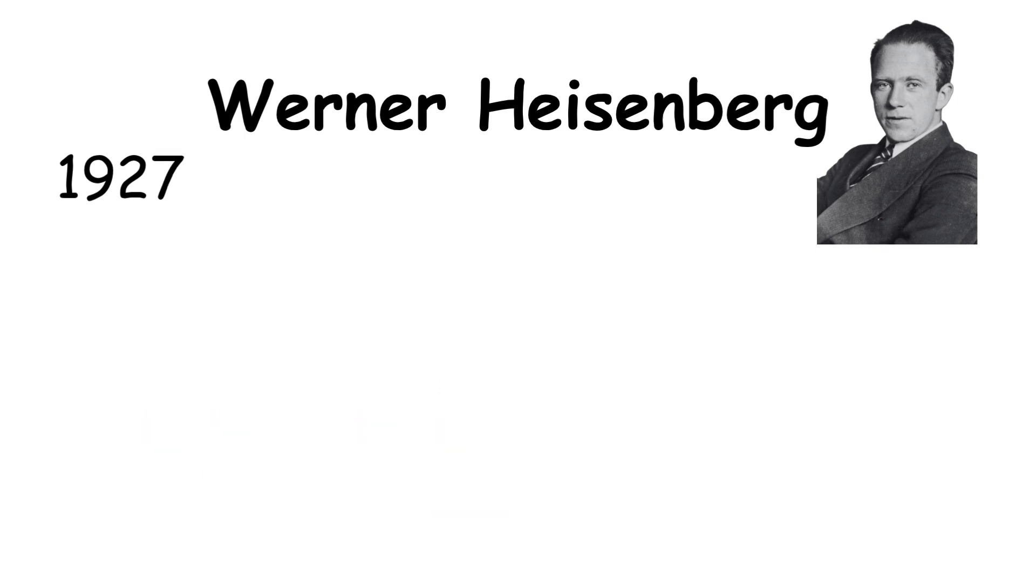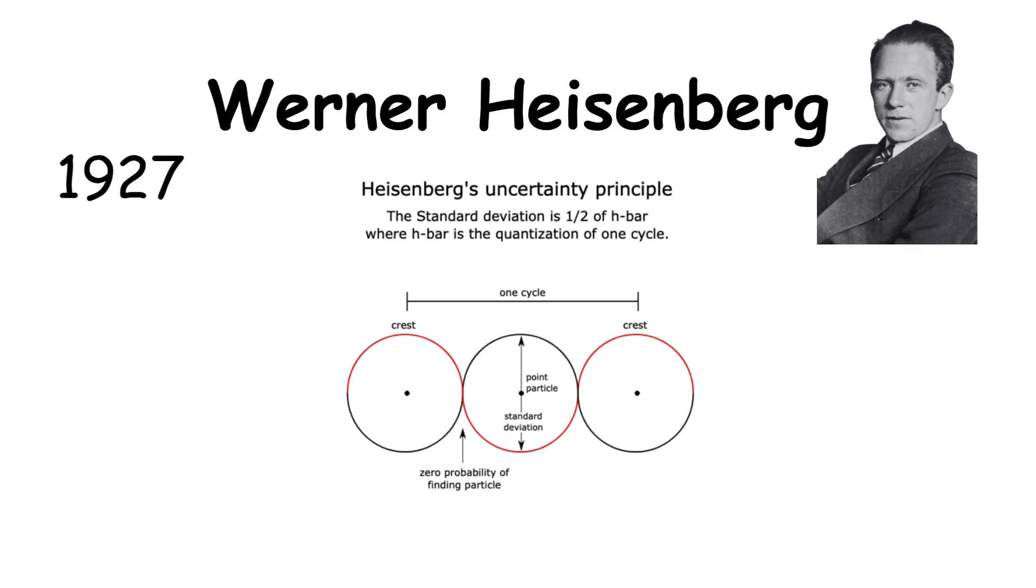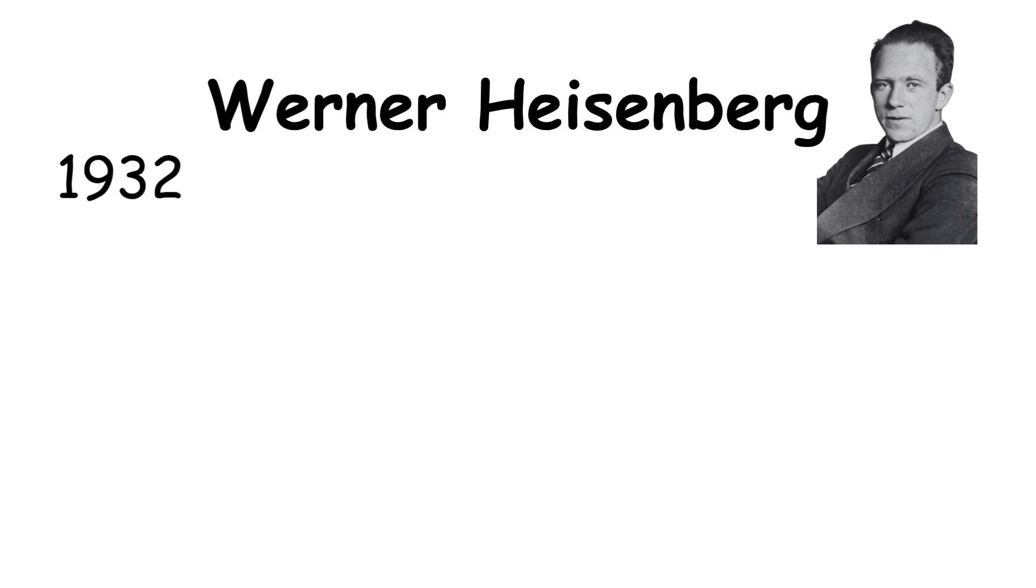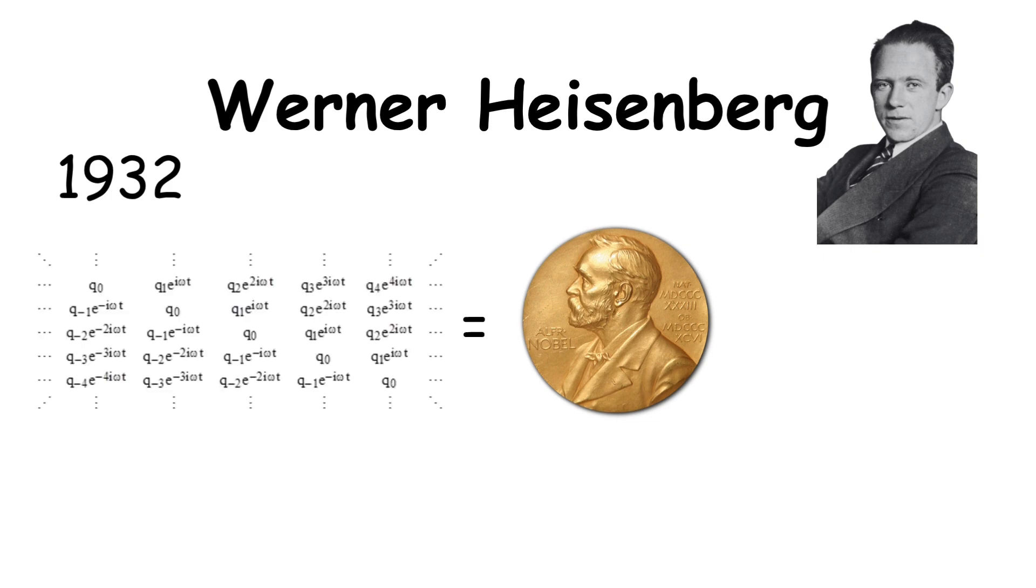Then, in 1927, he introduced the uncertainty principle, which states that the more precisely you know a particle's position, the less precisely you can know its momentum. He received the Nobel Prize in physics in 1932 for the creation of matrix mechanics.